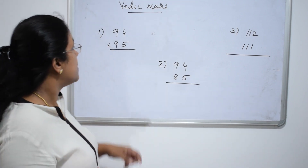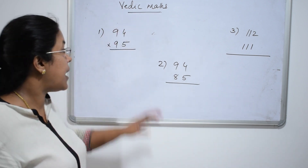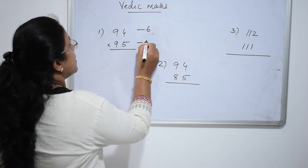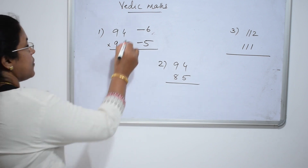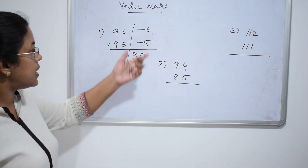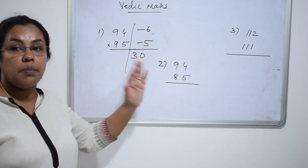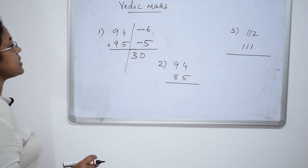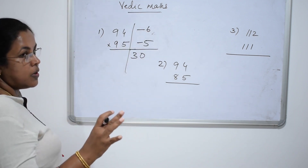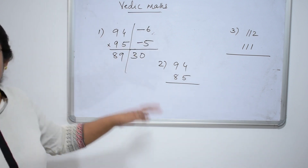Let us practice more. 94 into 95 — since these are close to 100, we use the base 100 method. Write the deviations: 94 is 6 less than 100, so write minus 6; 95 is 5 less than 100, so write minus 5. Multiply: 6 fives are 30 — since base is 100, the right side must have 2 digits, so write 30. Subtract 5 from 94: that gives 89. The final answer is 8930.